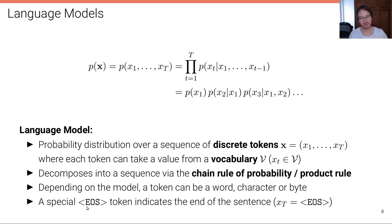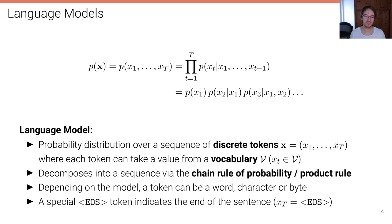One thing that's also important is that we typically introduce in language models a special token — the end-of-sentence token — into the vocabulary. So the vocabulary is the set of all words that we want to model plus this end-of-sentence token, which indicates the end of a sentence. So whenever we predict the next word, we can predict one word from the vocabulary, or we can predict the end-of-sentence token to indicate that the sentence is finished and the next sentence can start.